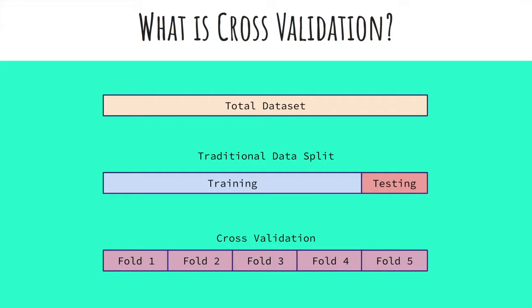These folds aren't immediately designated as training or testing. We want to pick how many folds we will split our data into. Common sizes are 5 or 10, but that's to your discretion. You can see in this example I chose to create 5 folds. Each fold will contain the same percentage of the total data. You will not see the same observation in two different folds — a given observation can only show up in one fold.